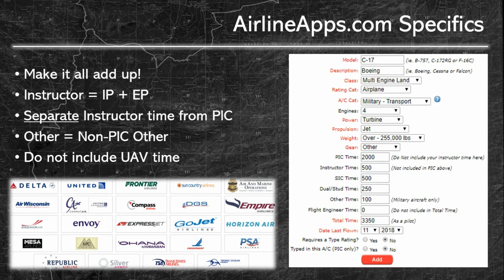The mantra to follow for airlineapps.com is to make it all add up. In the Air Force, the component times — primary, secondary, instructor, evaluator, and other — are always required to add up to your total time, and that's how you want to do it for airlineapps.com. Since there's no evaluator column, your instructor time should equal your Air Force instructor plus evaluator time. Keep instructor PIC separate from basic aircraft commander PIC time, and use the other block for any time not allocated towards PIC. Note that you should not include any UAV or RPA time when applying to the airlines.